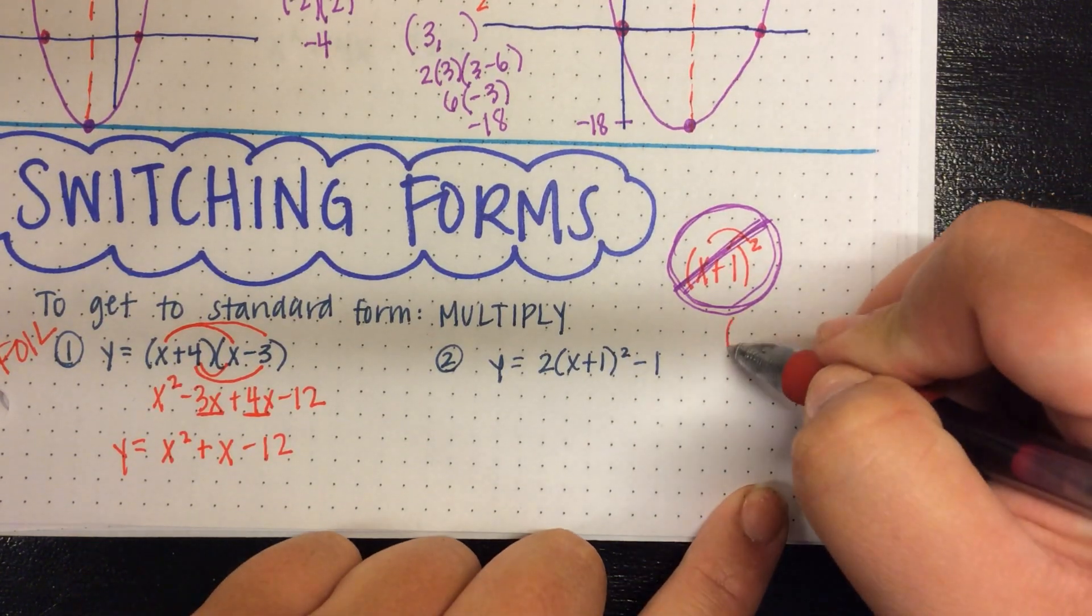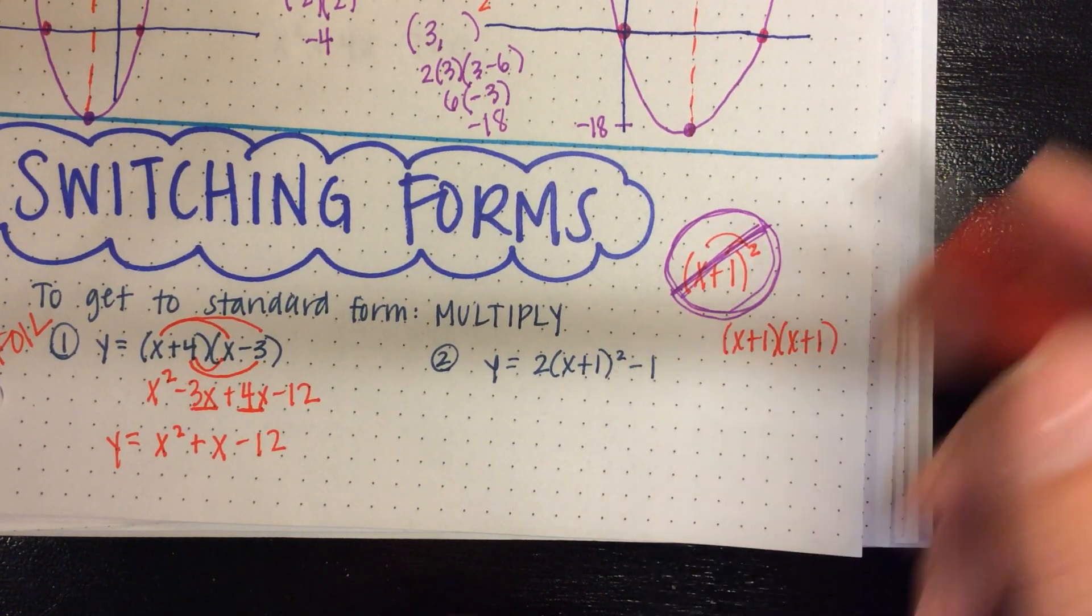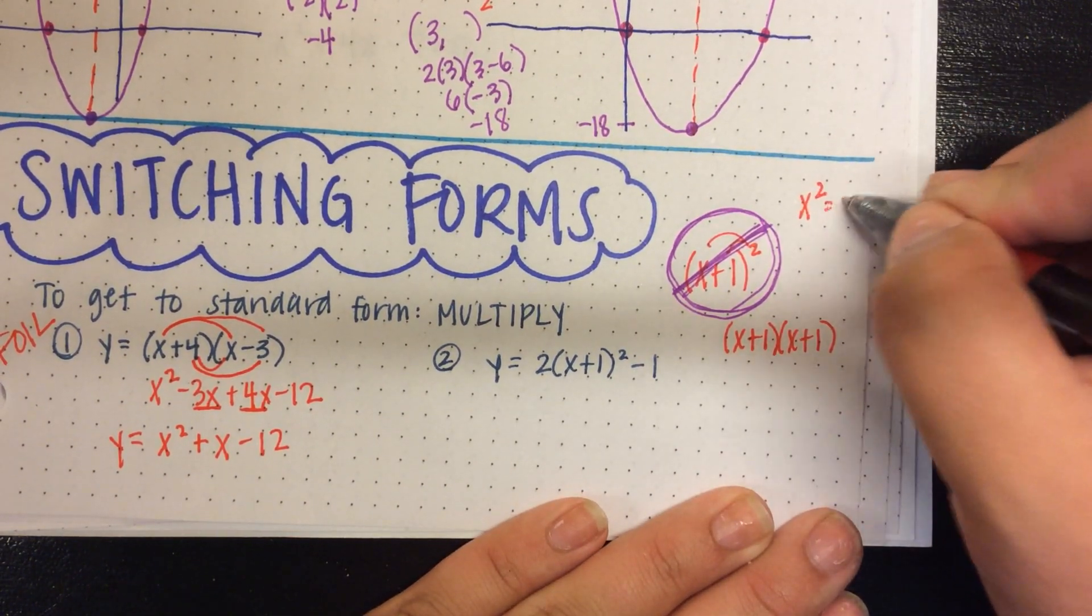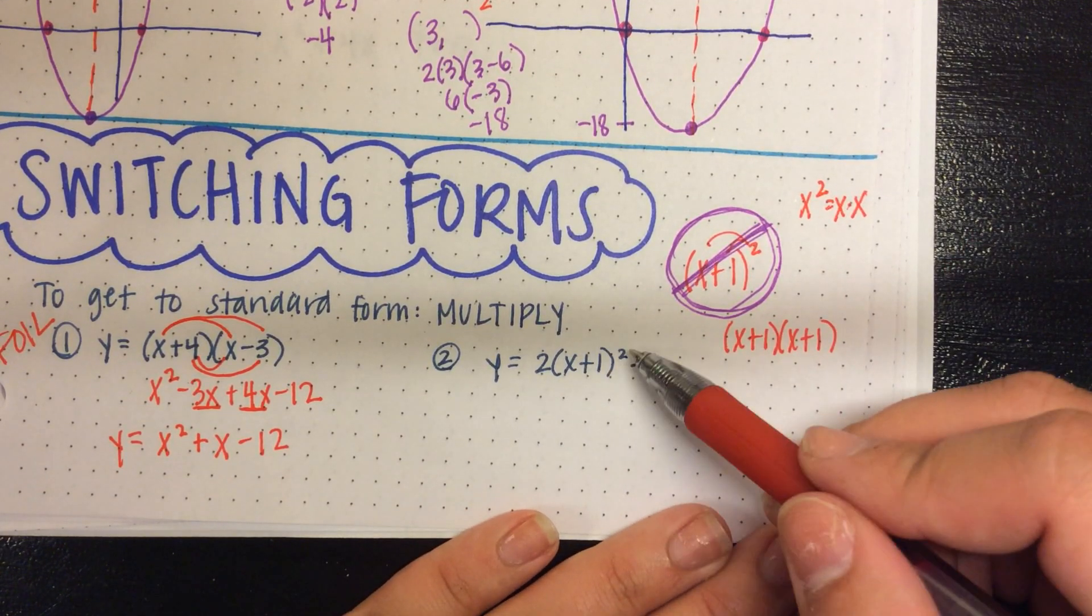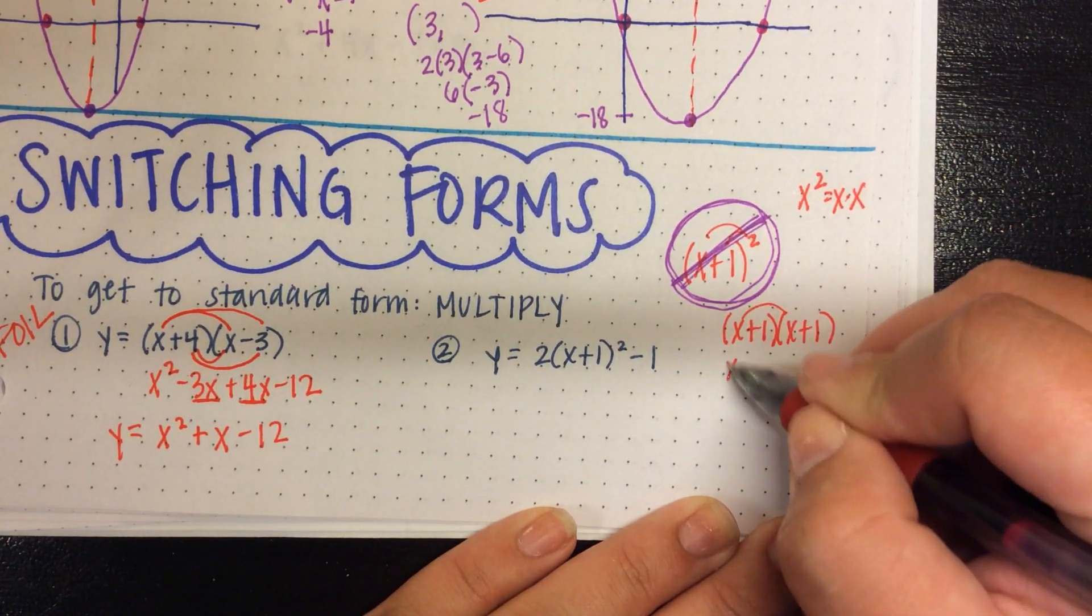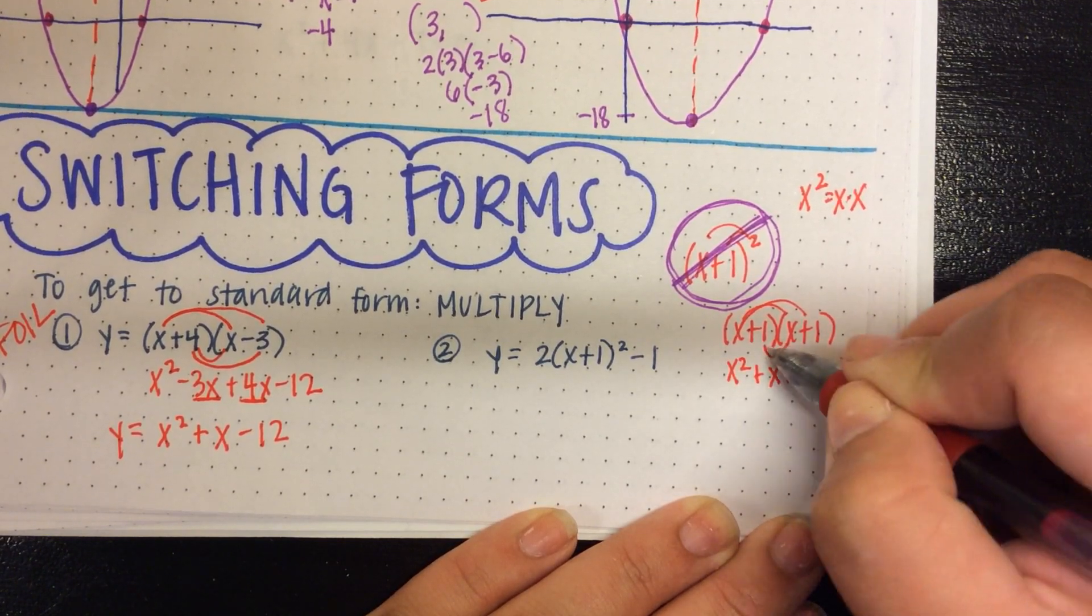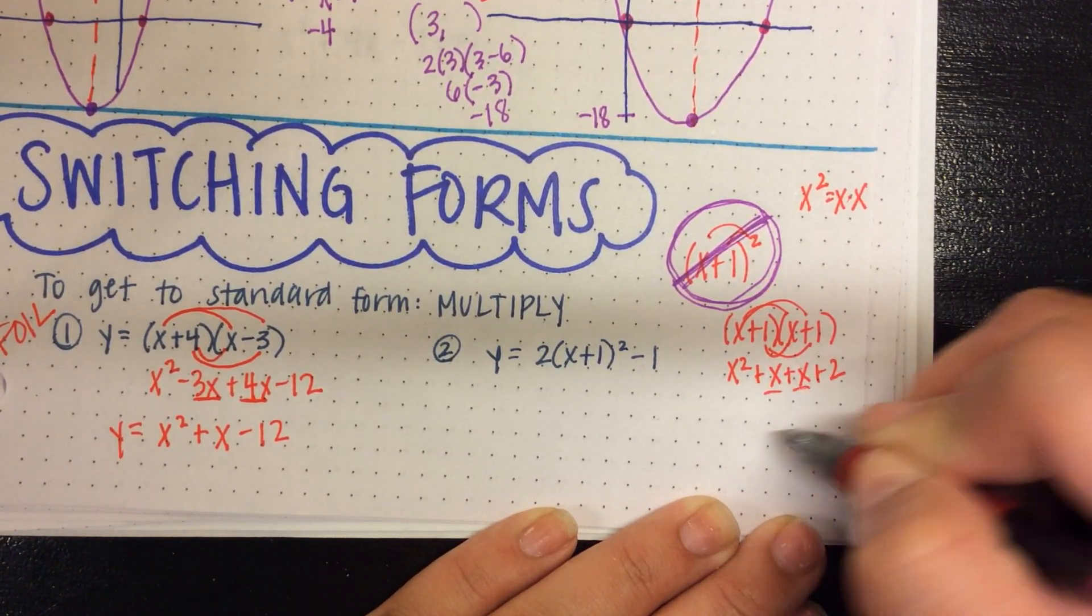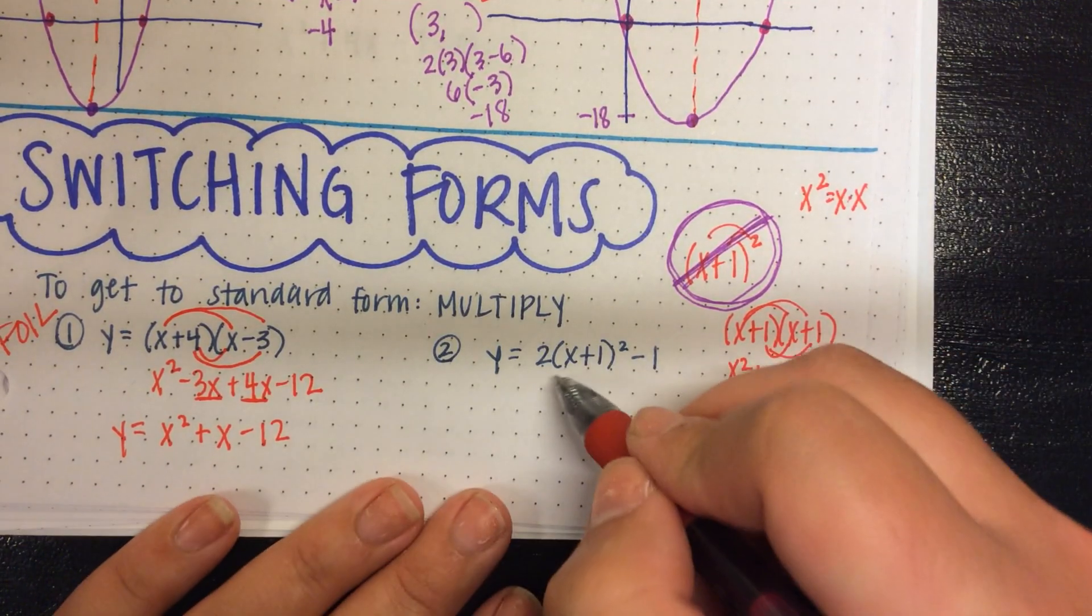To do a binomial squared, we have to do x plus 1 times x plus 1. Multiply it by itself. Because remember, x squared equals x times x. So then a parenthesis squared is going to equal the parentheses times parentheses. So then we can FOIL. So we have x squared plus 1x plus 1x plus 2. Like terms, so we have x squared plus 2x plus 2.